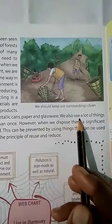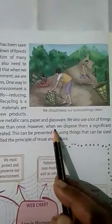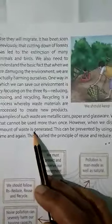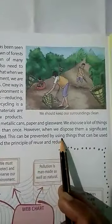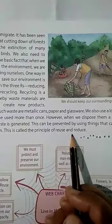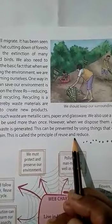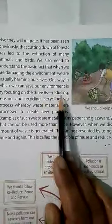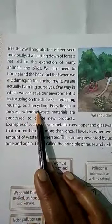We use a lot of these things that cannot be used more than once, so when we dispose of them, a significant amount of waste is generated. This can be prevented by using things again and again — the principle of reuse and reduce. By recycling and following the three R's of reducing, reusing, and recycling, we can save our environment. Thank you.